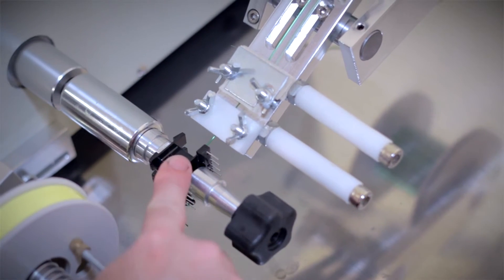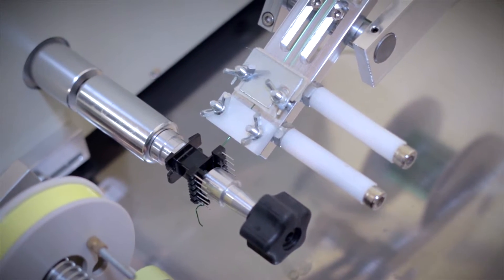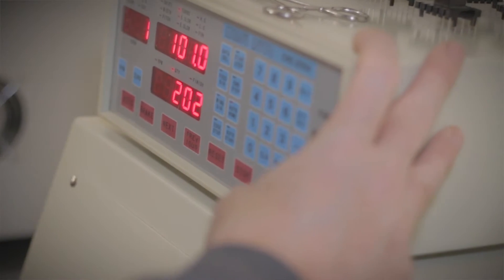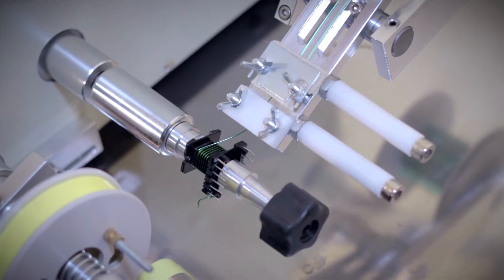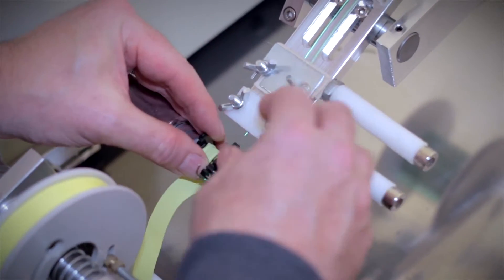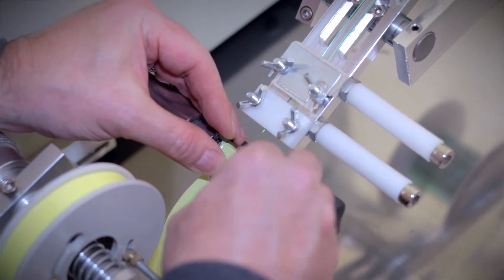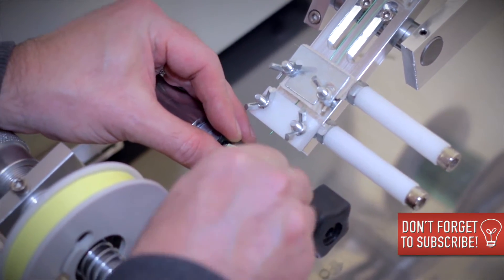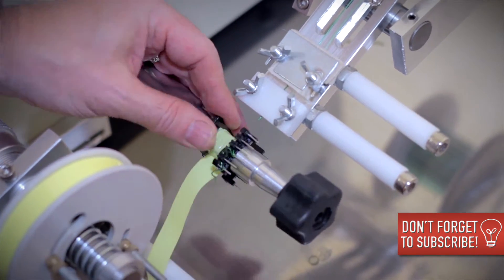Right now I'm going to wrap the primary ten times. The machine is programmed to do so, so all I have to do is hit start. There's our primary wrapped ten times. We're just going to attach the second part of the loop to the second contact. There's the primary.